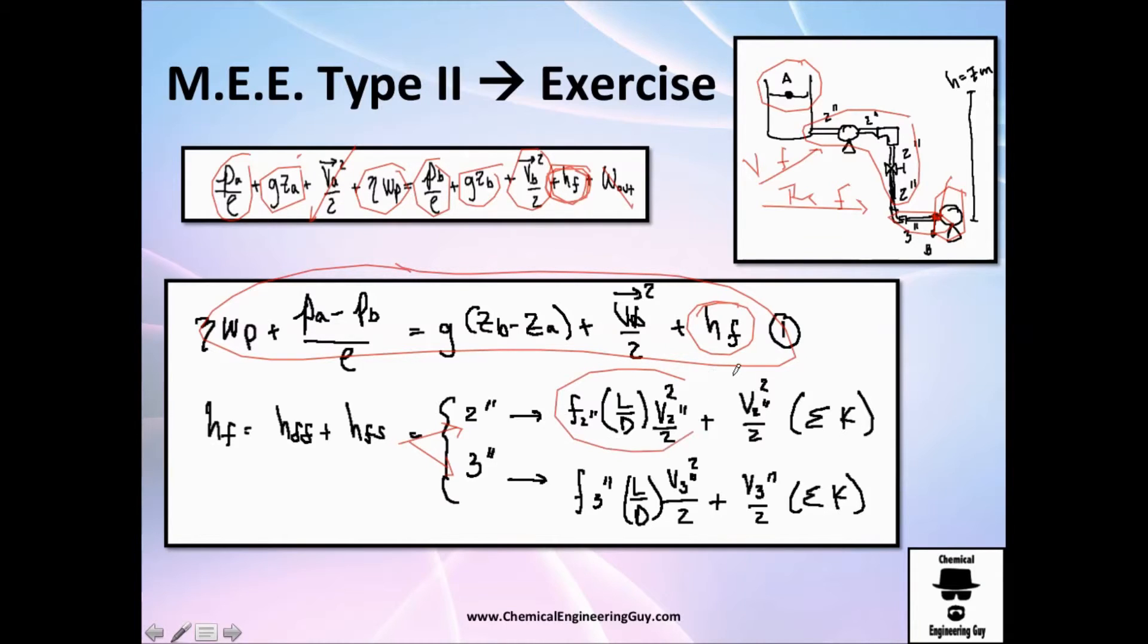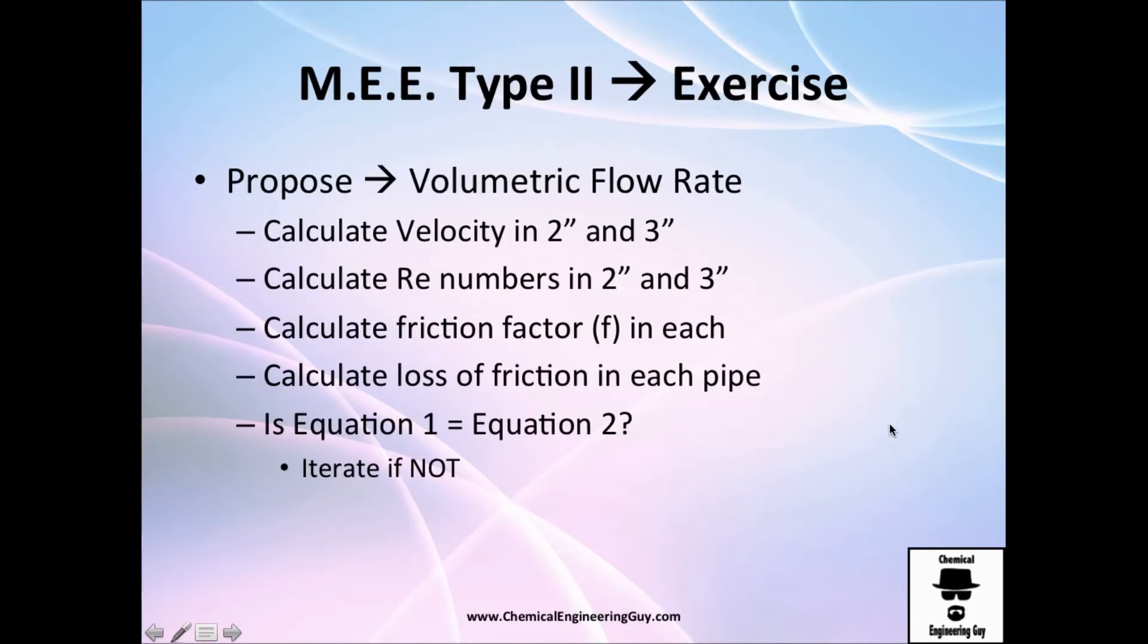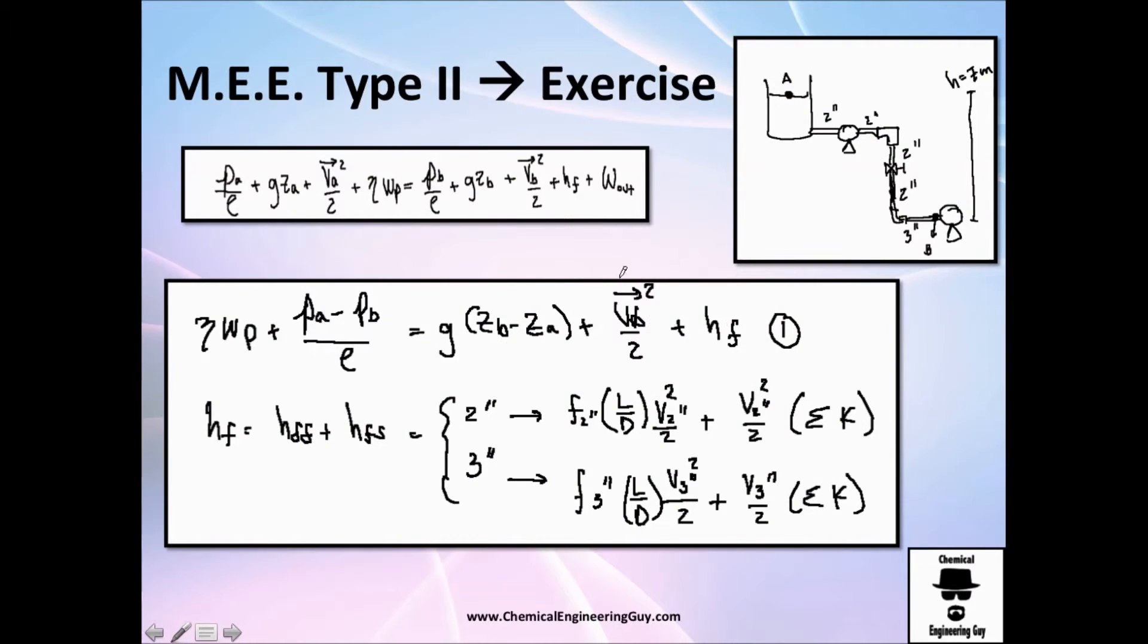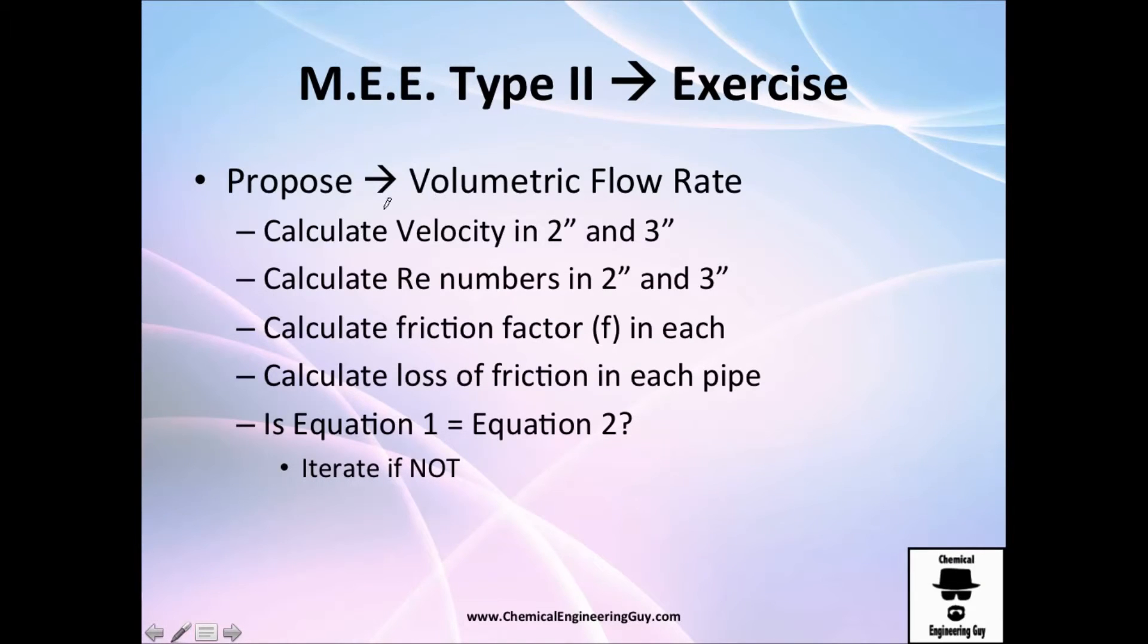You do exactly the same as we did before. Two times, because we have two pipes, and once you calculate the total friction, you will be able to solve for the question you are finding, which is probably what this pump works. This is your summary. Propose a volumetric flow rate always. With a volumetric flow rate, calculate velocity in pipe size two inches, pipe size three inches. Calculate Reynolds number in both pipes. Calculate the friction factor in each pipe. Calculate the loss of friction in each pipe. I know it's very tedious, but it's very important to make you understand that we need to calculate the friction loss separately.